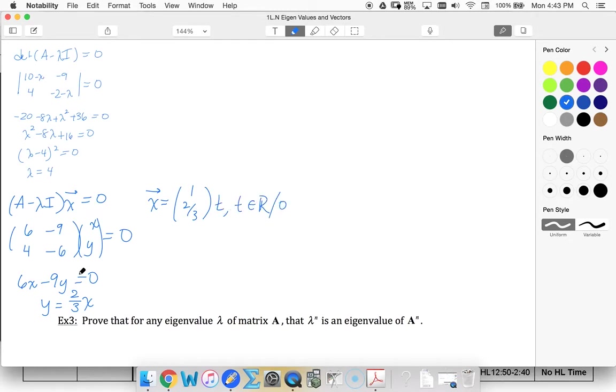And we exclude 0 for the solution to the homogeneous equation. My null space would include 0. My eigenbasis is going to be the vector 1, two-thirds, or any equivalent multiple. Alright.